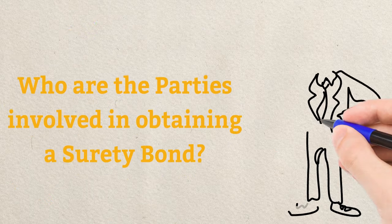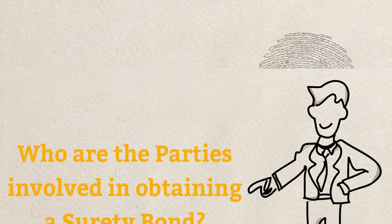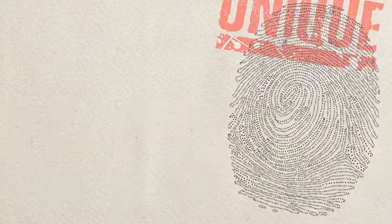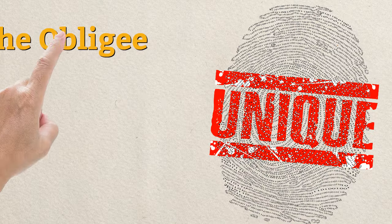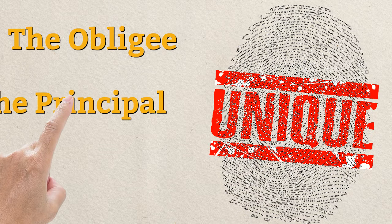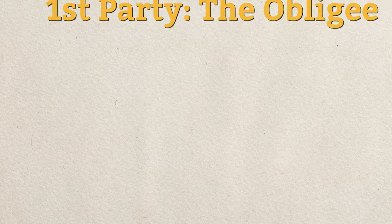Who are the parties involved in obtaining a surety bond? What makes surety bonds unique is that they always have three parties: specifically, the obligee, the principal, and the surety.